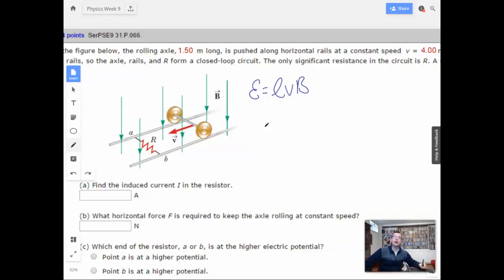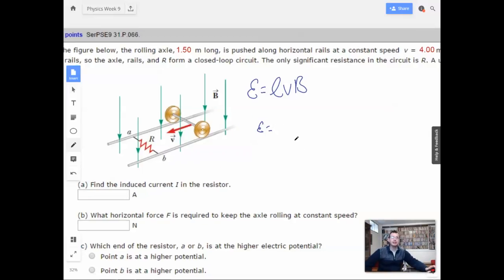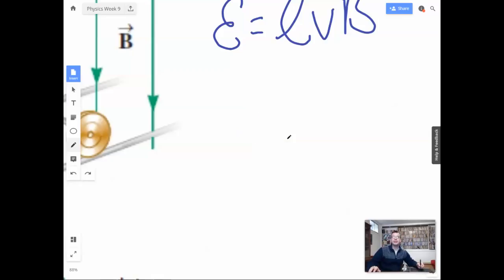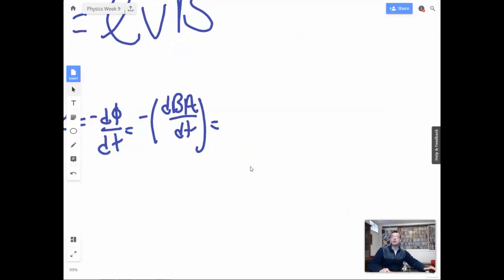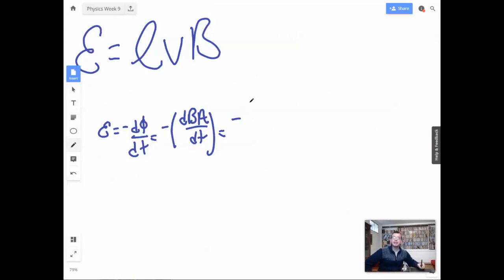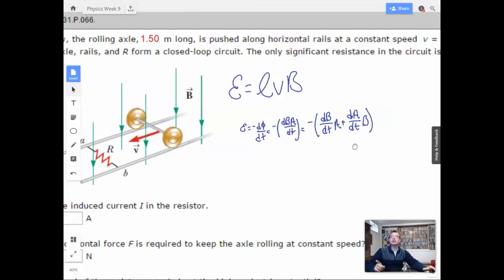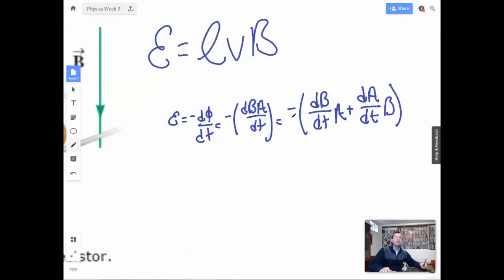So the long way to go about it, which I think it's valuable to actually know, because if you know the way to do it the long way, all these problems are pretty much the same. Negative dΦ/dt equals negative magnetic field times area over t, which equals negative dB/dt times area plus dA/dt times B. So this is just the product rule.